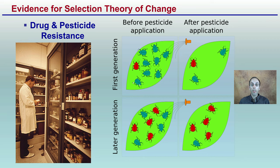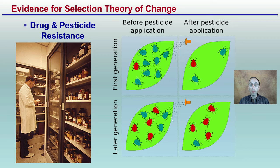Within this theory of change, we have drug and pesticide resistance, which becomes an issue. If we have a collection of bugs eating a crop, we have this first generation. Then a pesticide application is applied, and for whatever reason the red bugs have a natural resistance to that particular chemical, and a couple of others survive based on their location when the spray occurs. The next generation, when the same chemical is applied, the red bugs survive in greater numbers, meaning these bugs have a resistance to this pesticide.